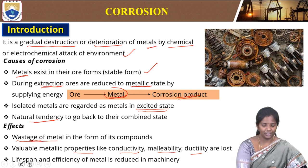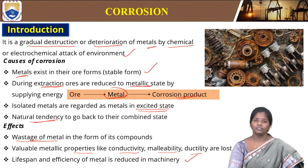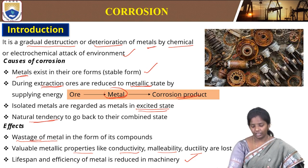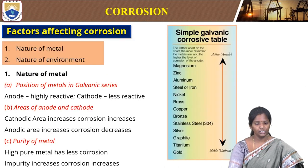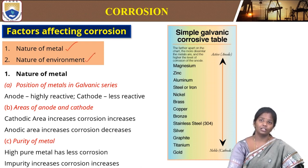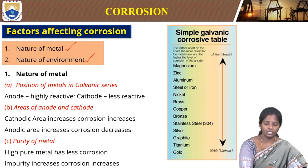Ultimately corrosion leads to reducing the lifespan and efficiency of metal. When we are using it particularly for machinery, if during usage it is getting corroded, then we ultimately lose the efficiency of that machine. The nature of metal and the nature of environment are the two main factors affecting corrosion, and within those there are again some different sub-factors.